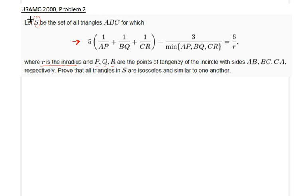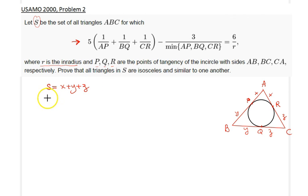Okay, first let's draw a picture. So we have our triangle ABC here, with the incircle. The touch points are given to be here. This is x, x, y, y, z, z.